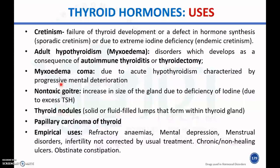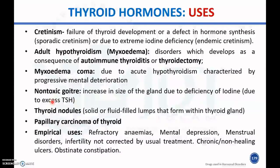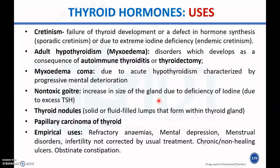Additional uses include treatment of non-toxic goiter — increased size of the gland due to iodine deficiency with excess TSH from the pituitary — and thyroid nodules, which are solid or liquid-filled lumps within the thyroid gland. It is also used in papillary carcinoma of the thyroid, and empirically for refractory anemia, mental depression, menstrual disorders, infertility not corrected by usual treatment, chronic non-healing ulcers, and obstinate constipation.